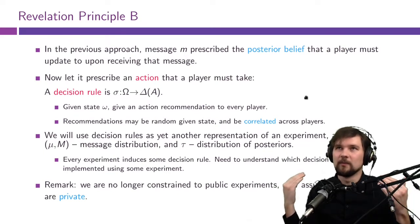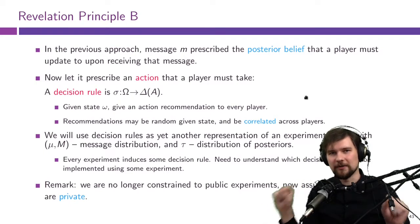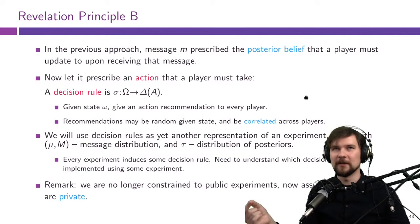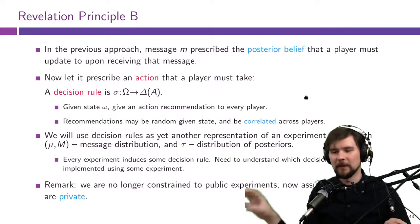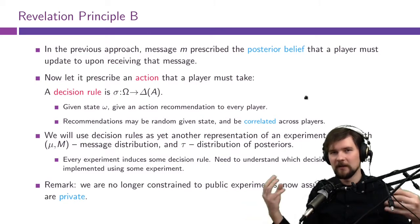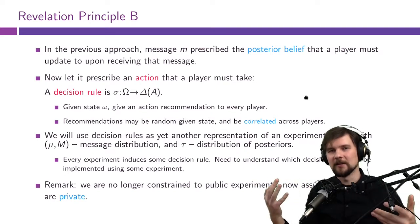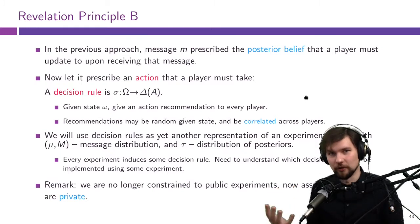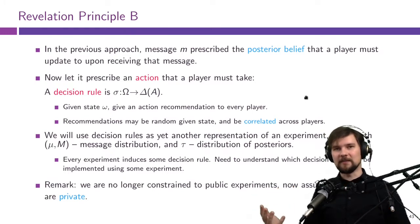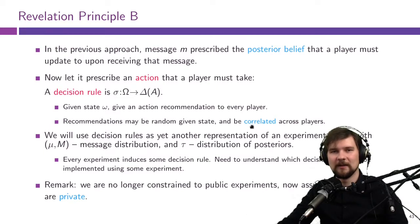In the first approach, we said the message should tell you exactly what to think, and then the principal can calculate what the players will do given what they think. It seems like there's an extra step we can get rid of. In particular, why don't we just tell the players what to do? It's not that much different — and it's actually even better for private persuasion, because we're giving them slightly less information.